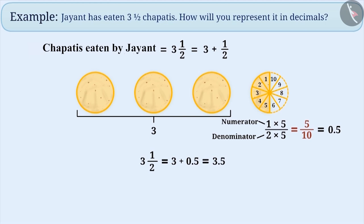Thus, in decimal form, we can say that Jayant has eaten 3.5 chapatis.